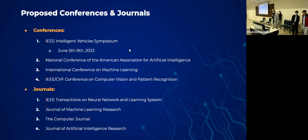For the conferences, we have the IEEE Intelligent Vehicles Symposium, the National Conference of the American Association for Artificial Intelligence, the International Conference on Machine Learning, and the IEEE Conference on Computer Vision and Pattern Recognition. We are mostly interested in the first one, which will have its 33rd round next June.